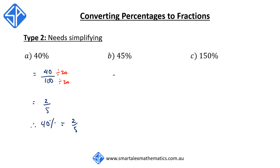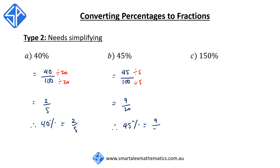45% is the same as 45 out of 100. We can simplify by dividing both the top and the bottom by the common factor of 5. This reduces it to 9 over 20. So therefore, 45% is the same as 9 over 20 as a fraction.